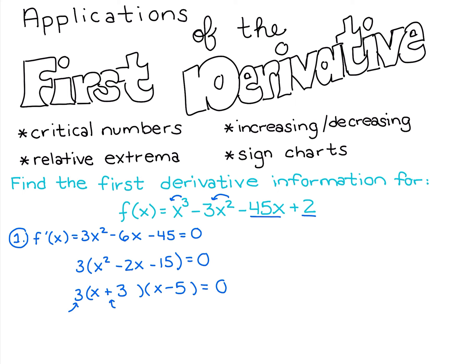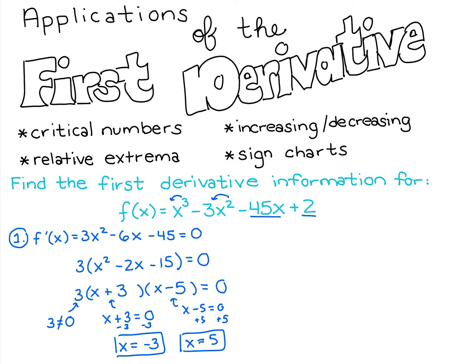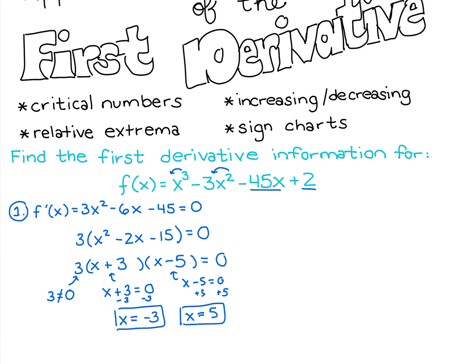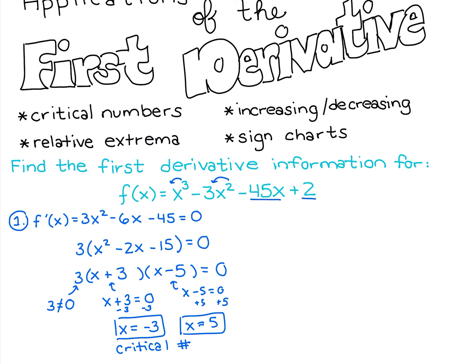This product can only be 0 if at least one of the three factors is 0. The factor 3 can never equal 0. But x + 3 = 0 gives x = -3, and x - 5 = 0 gives x = 5. These are our critical numbers — the values that make the first derivative 0. Since there's no denominator in the first derivative, they're not undefined, and since the original function is a polynomial, any number can go in for x.